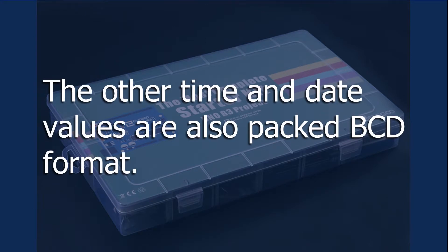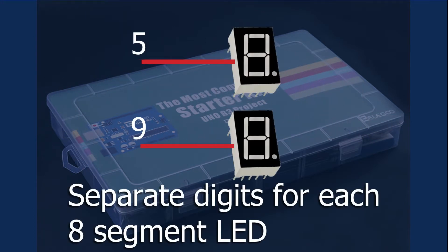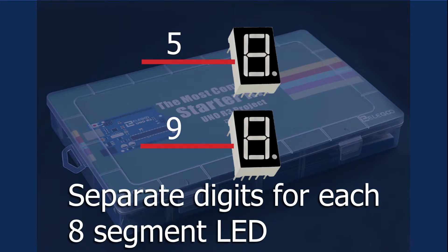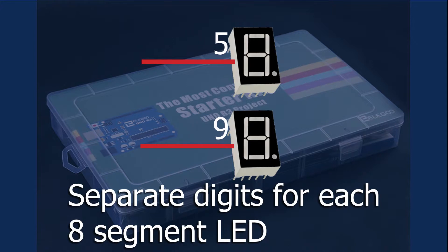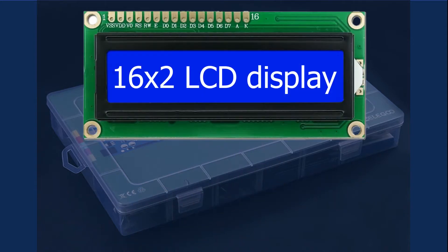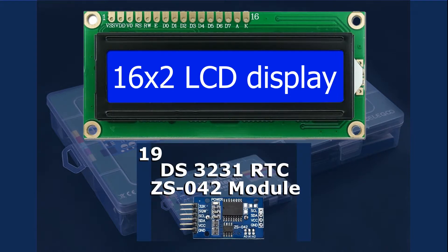The other time and date values work in a similar manner. The obvious advantage is that the coder could separate the nibble sections and pass those values to each digital LED circuit. But for the 16 by 2 LCD display and the alarm clock shown in lesson 19, I had to use a function to convert the BCD to binary and the binary back to BCD.